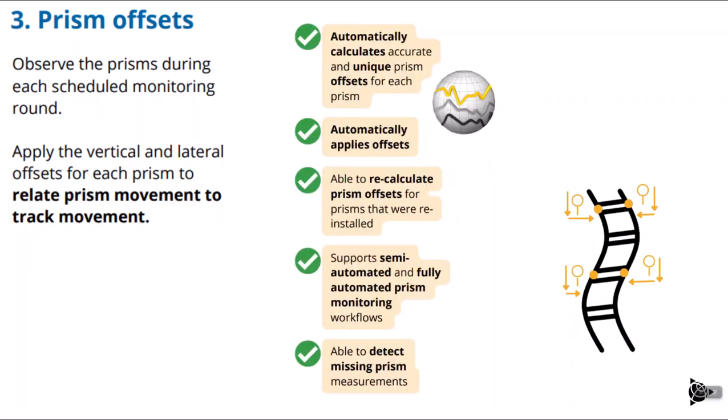T4D Rail automatically calculates the prism offsets for each prism individually — it doesn't apply one set of offsets to all prisms. It calculates a unique set of offsets for each prism, and not only does it calculate that automatically, it automatically applies those offsets each time you have a new measurement. This is a huge time saver and less error prone than doing it manually. And if a prism gets destroyed and needs to be replaced, you can recalculate the prism offsets for the replacement prism.